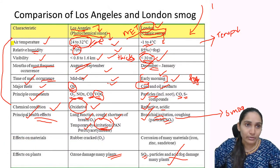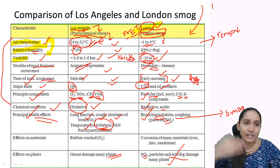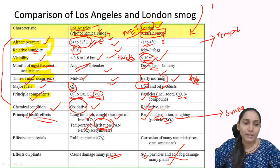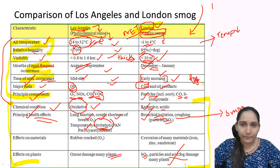Effects on plants: ozone from photochemical smog damages many plants, while SO2 (sulfur dioxide), particles, and acid fog from classic smog also damage plants. So in both cases, plants are affected. The most important exam topics from this comparison are: air temperature, humidity, visibility, months of occurrence, time of occurrence, fuels, and principal components.